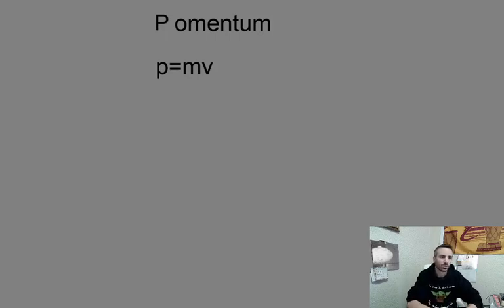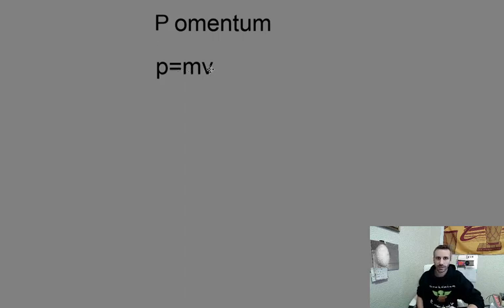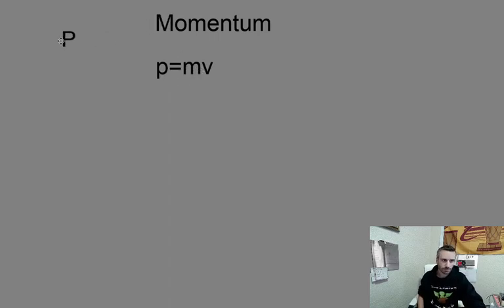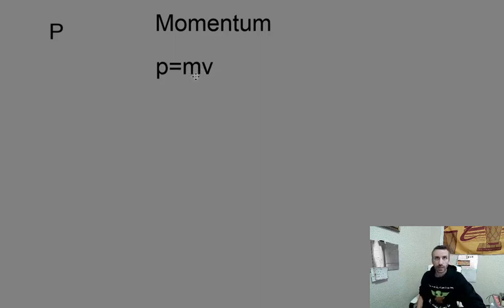Welcome to my AP Physics 1 lesson on momentum. That might sound a little bit different than what you've heard before, but it is P equals mv. Momentum is mass times velocity, so it clearly starts with a P. Maybe the m was already taken by other things, such as mass. But mass times velocity is momentum.